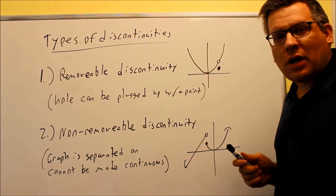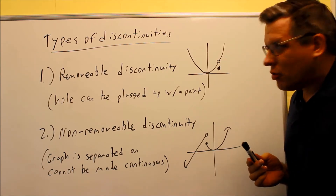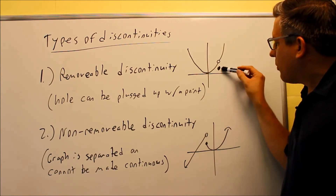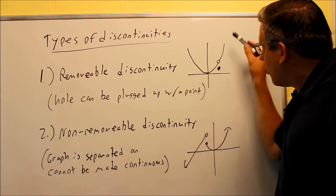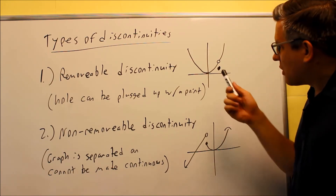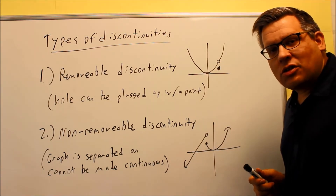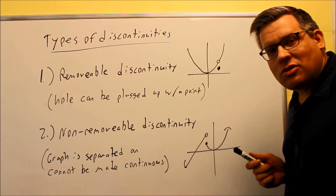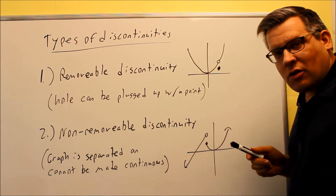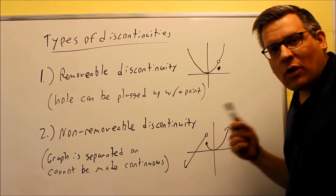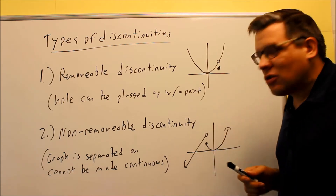If it's removable, that means it's possible to make it continuous again by assigning a point to fill up a hole. In this drawing, there's an open circle with a point down below. I could assign another point to plug in and fill up that hole, and then the whole thing would be continuous again. The second type is non-removable discontinuity, which means that no matter what I do, I cannot make it continuous. For instance, in this drawing the graph is separated — one goes up and one goes down. I could plug in the hole, but that wouldn't make it continuous because there's still a break in the graph. So in that case, this is considered non-removable.